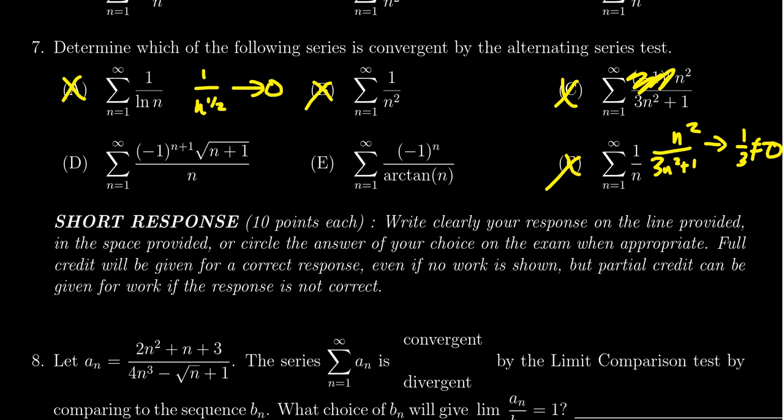I want to show this one doesn't work. If you take one over the arctangent of n, as n goes towards infinity, one over arctangent is actually going to go off towards one over π/2, which is two over π.